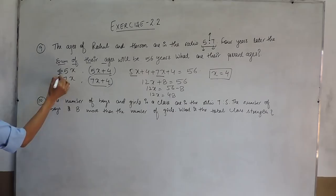So, Rahul's age would be 5 into 4, which means 20 years, and Haroon's age would be 7 into 4, which means 28 years.